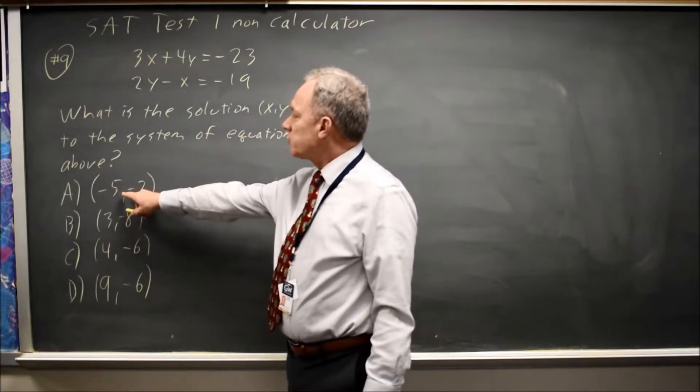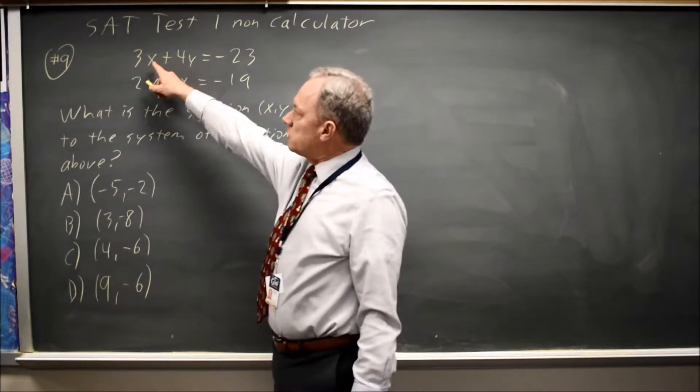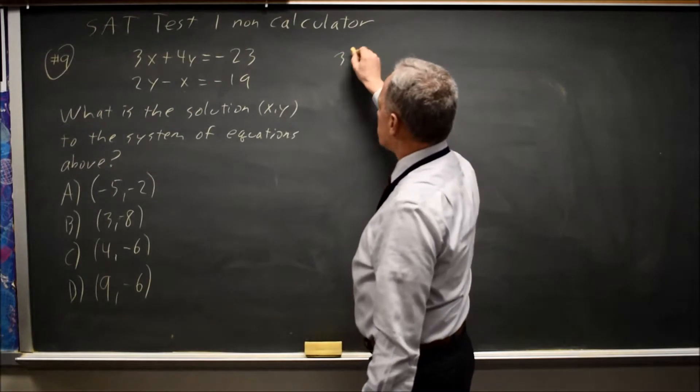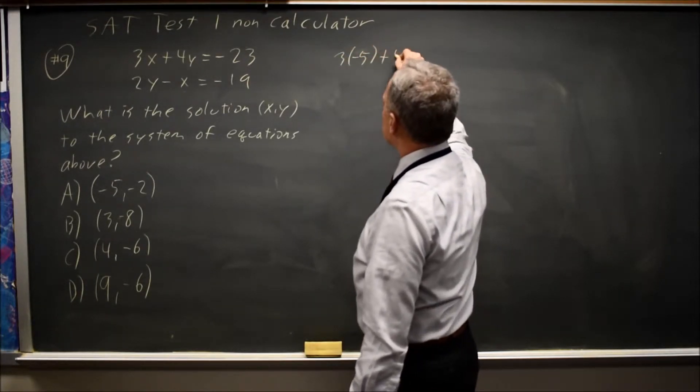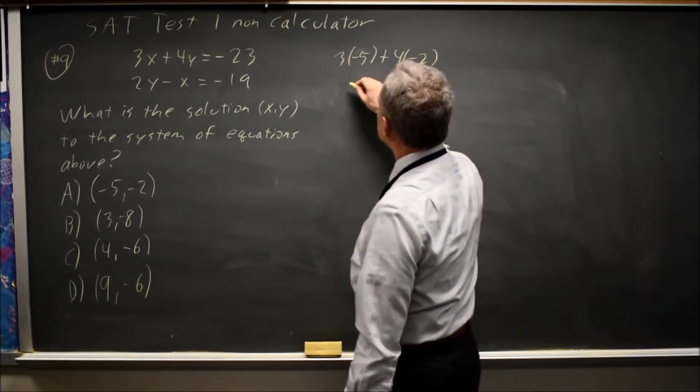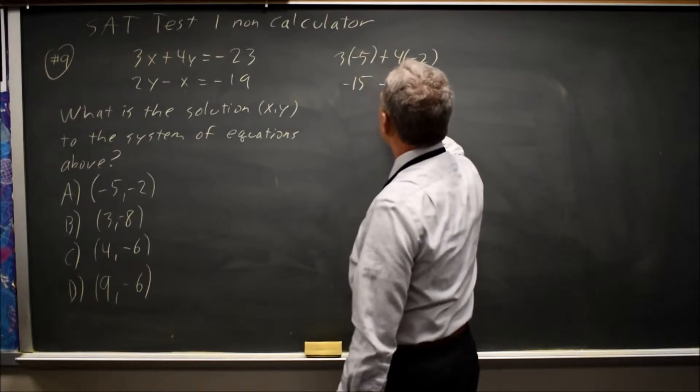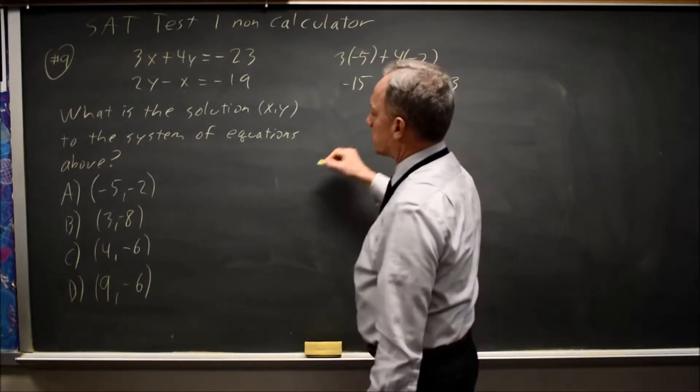So if x is negative 5 and y is negative 2, 3x plus 4y is 3 times negative 5 plus 4 times negative 2, which is negative 15, minus 8 is negative 23. So that worked.